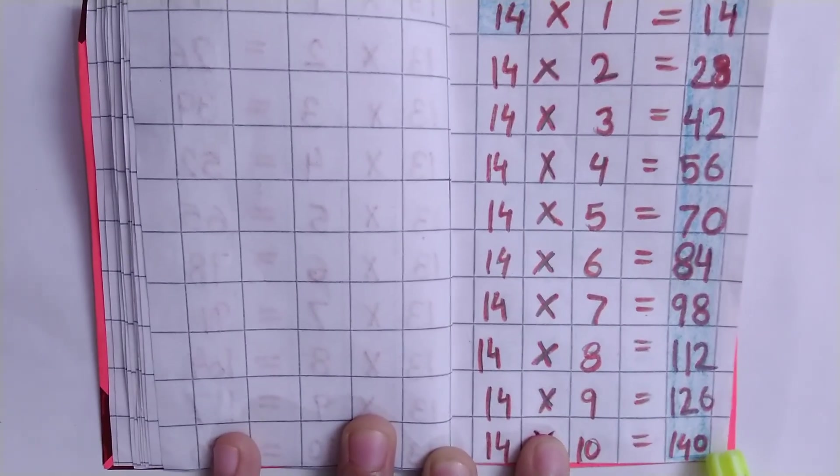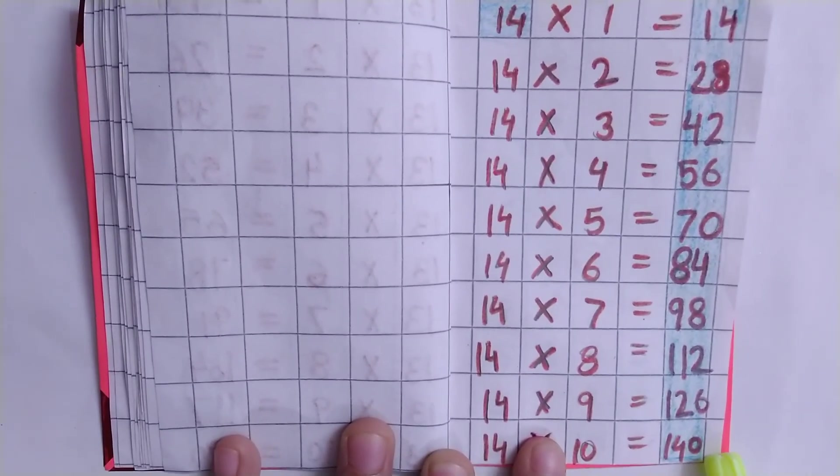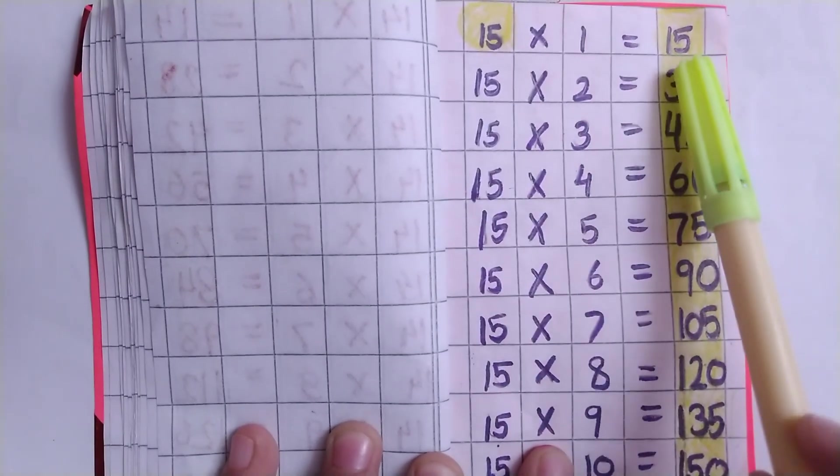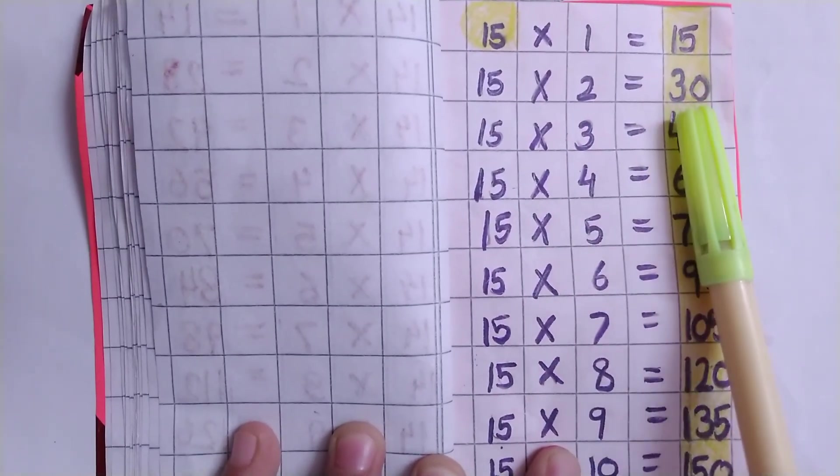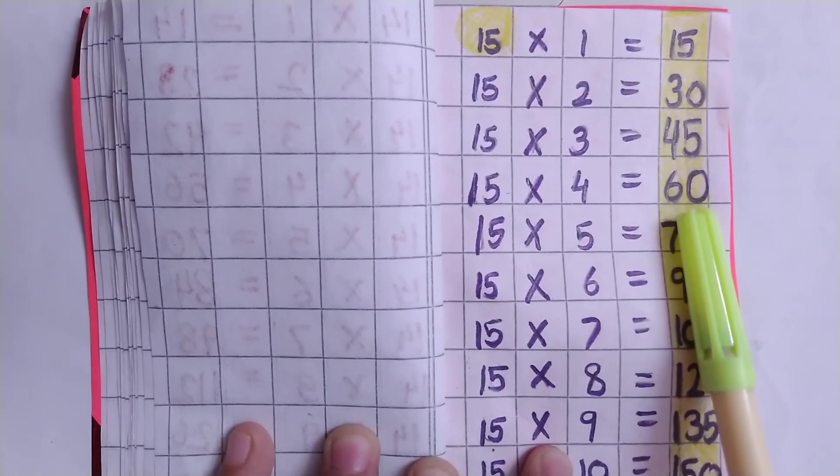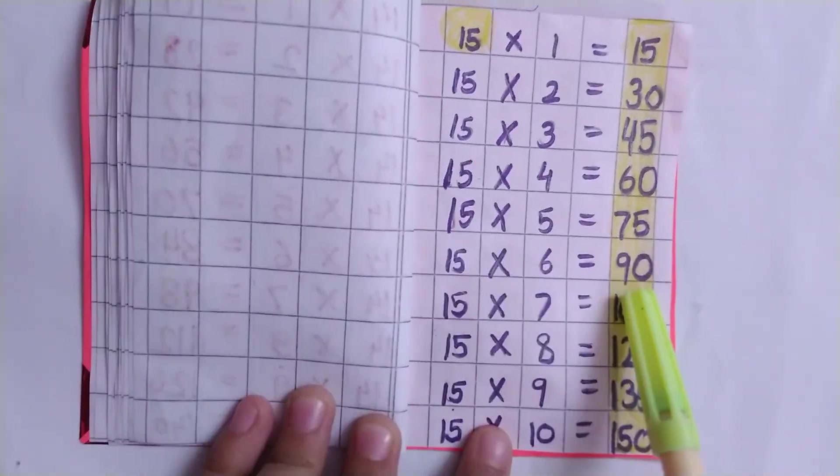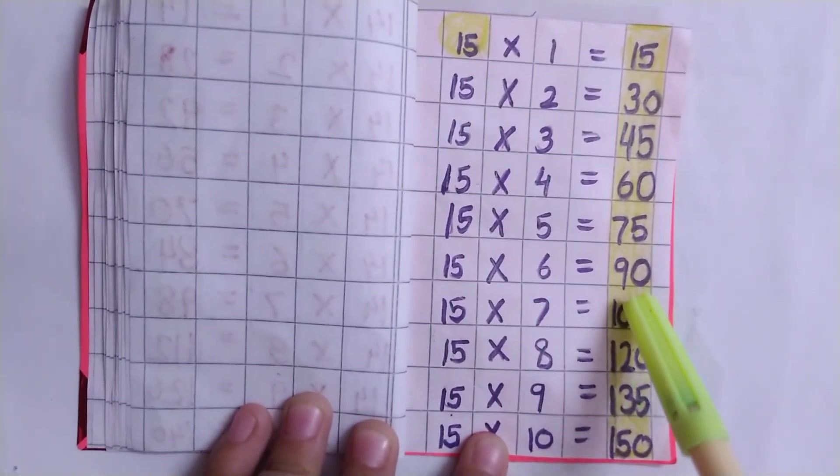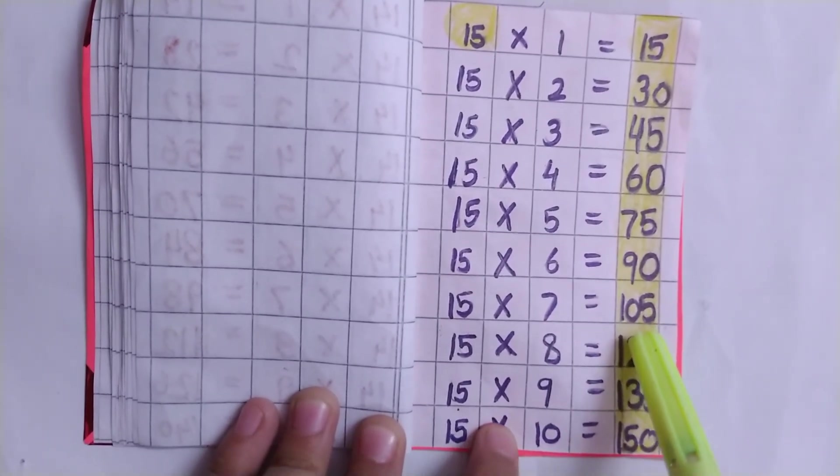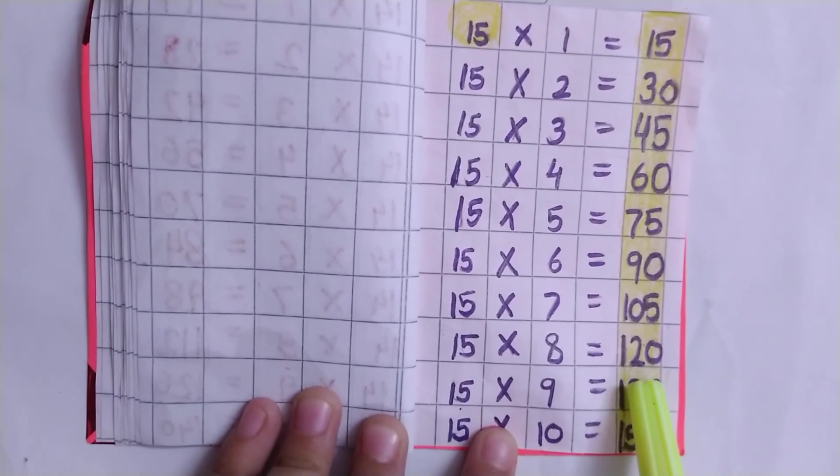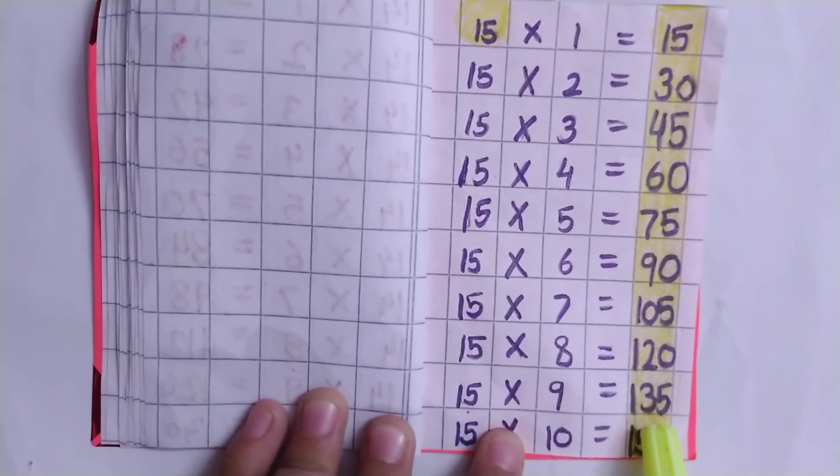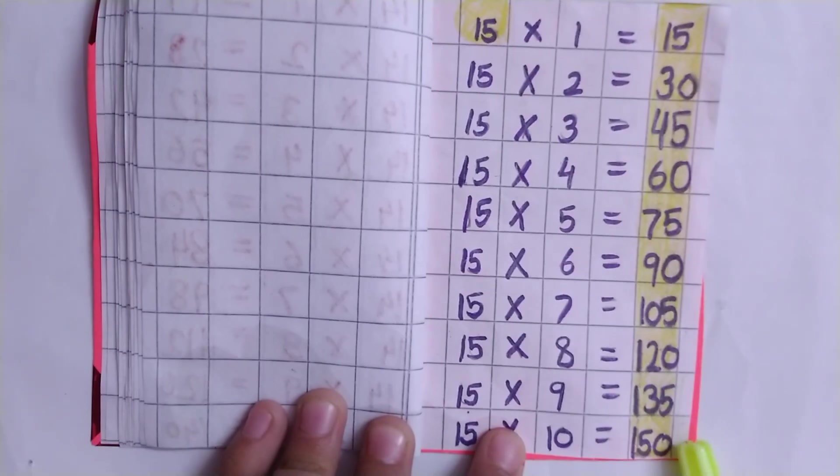Table of 15: 15×1=15, 15×2=30, 15×3=45, 15×4=60, 15×5=75, 15×6=90, 15×7=105, 15×8=120, 15×9=135, 15×10=150.